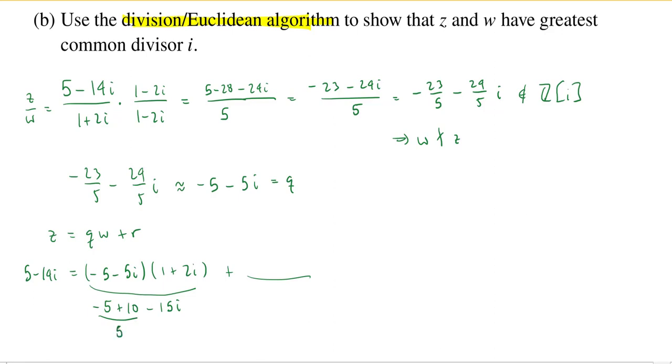Okay, so this gives me five minus 15 i. And you see, I'm only off by the answer I'm supposed to get, five minus 14 i, by a single i. So all I have to do is add an i, and then I'll have a correct statement. And this i, of course, we know the norm of i is one, which is less than the norm of one plus two i. This is less than five, which is the norm of one plus two i.